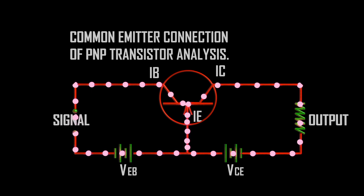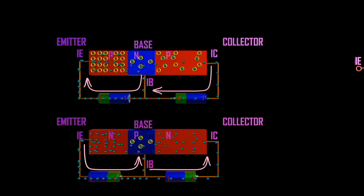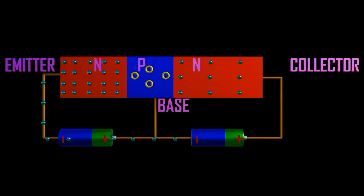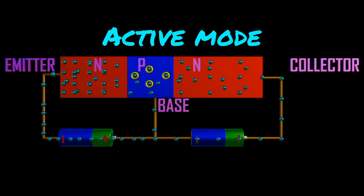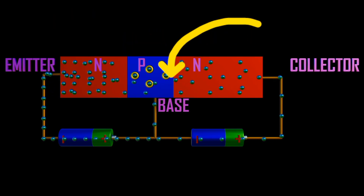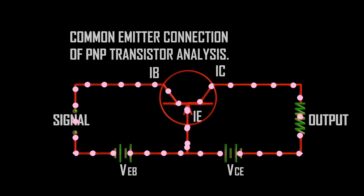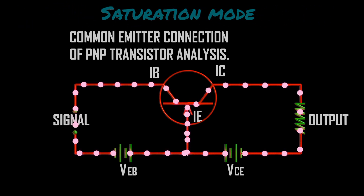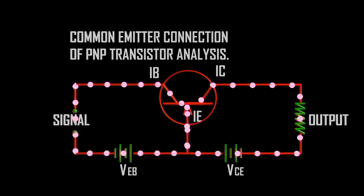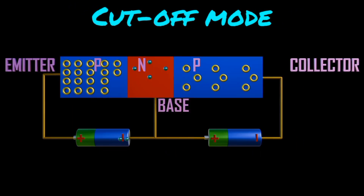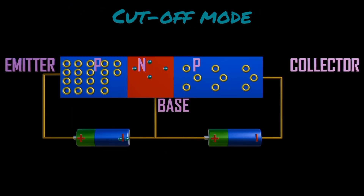The BJT symbols for PNP and NPN are shown. BJTs have three operating modes: (1) Active mode — base-emitter junction is forward biased and base-collector junction is reverse biased; (2) Saturation mode — both junctions are forward biased; (3) Cut-off mode — both junctions are reverse biased.